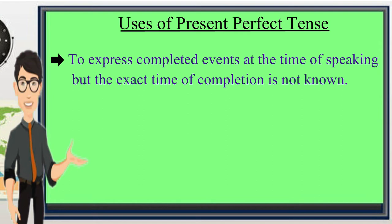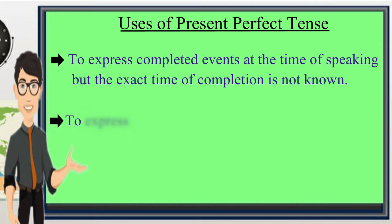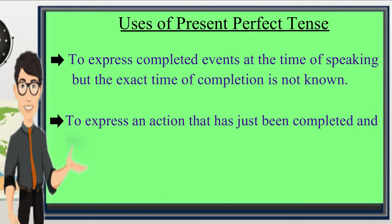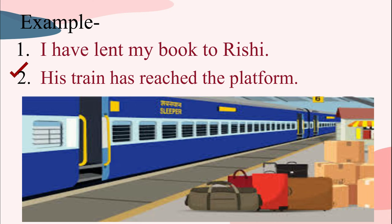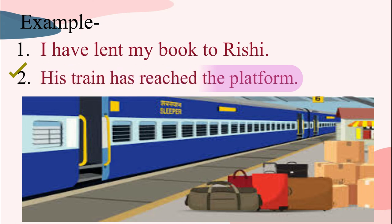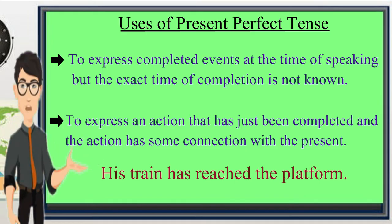Present perfect is also used to show an action that has just been completed and the action has some connection with the present. Let us read this sentence: his train has reached the platform. The action of reaching the platform has just been completed, and the statement of the speaker is somehow connected with the present — that is, at the moment of speaking.